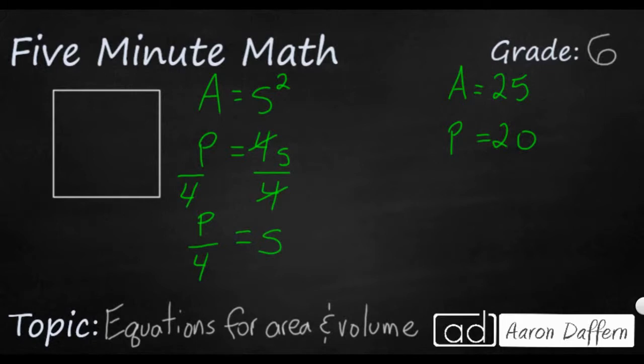My perimeter is going to be 20. So it looks like 20 divided by four, and that's going to equal five. So it looks like my side length is going to equal five.